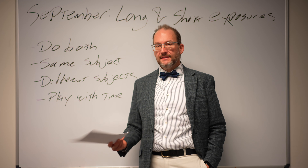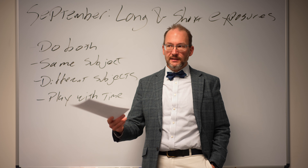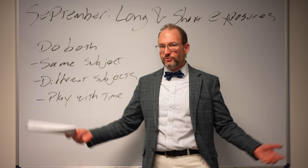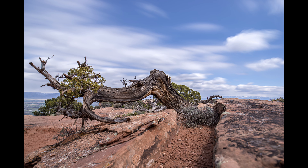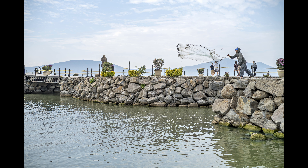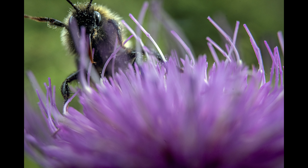Long exposure is basically anything that is longer than intended to be used for a subject — this is kind of context dependent. If you're photographing a hummingbird at a feeder, one one-thousandth of a second is a long exposure. If you're photographing a waterfall, one one-thousandth of a second is a very short exposure. The idea with long and short exposures is to get you to play with time, and to see how your work can benefit from using different shutter speeds to capture different subjects.